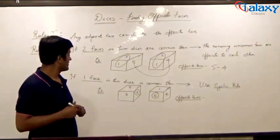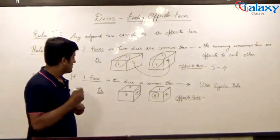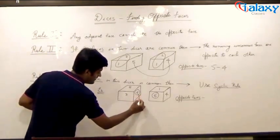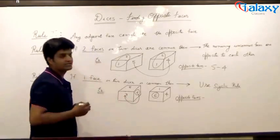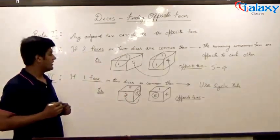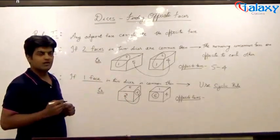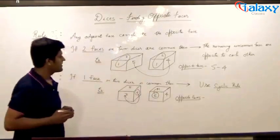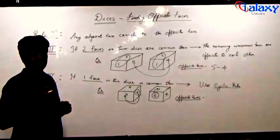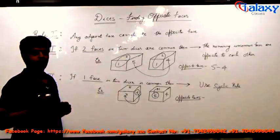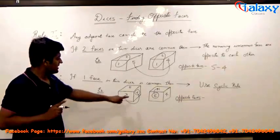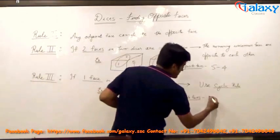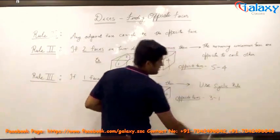Let us see how we can find all the three pairs. We will start with the common face and move in clockwise direction. In the second dice, we will move in the same fashion, that is clockwise direction. The first faces which are encountered are opposite to each other. In the first dice, we encounter three first, and in the second one we encounter one. Hence, three is opposite to the face having one.